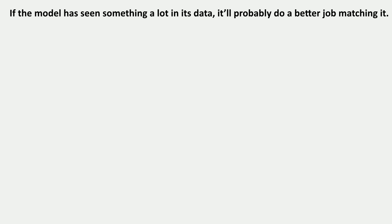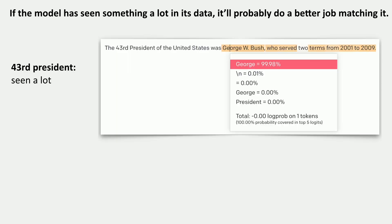These models will do better the more they've seen things in their data. So if we ask them "the 43rd president of the United States was blank," it will say George with probability 99.98%. That's because the model has seen the words "43rd president of the United States" a lot, memorized this, and gets it right.